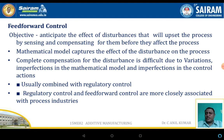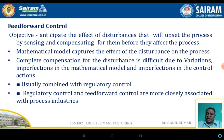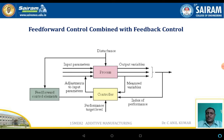The feed forward control system addresses this issue. The main objective of the feed forward control system is to anticipate the effect of a disturbance that will upset the process by sensing and compensating before it affects the process. Mathematical models capture the effect of the disturbance on the process. Complete compensation is difficult due to variations, imperfections in mathematical models, and imperfections in the control actions. Feed forward control is usually combined with regulatory control systems, and both are closely associated with the process industries.